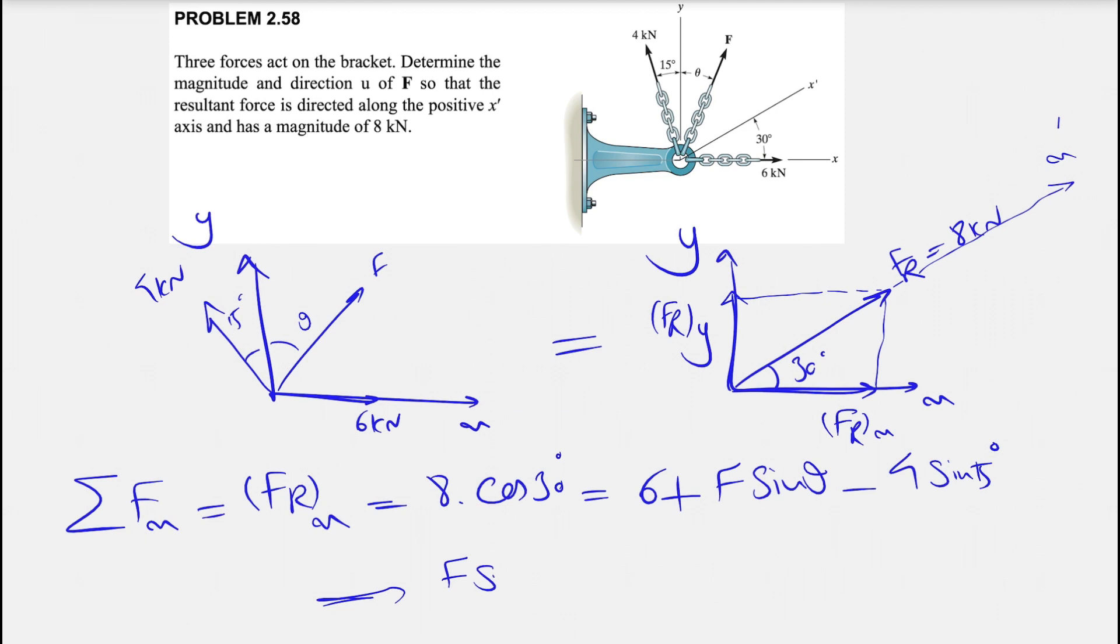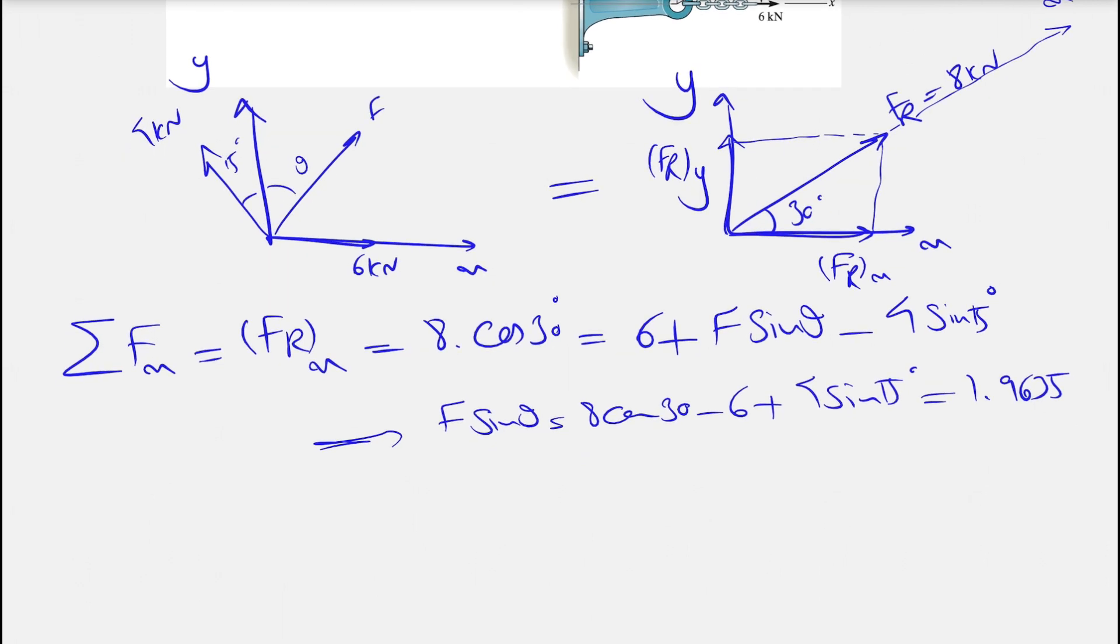And if we want to find the F sine of theta, we simply have 8 cosine of 30 minus 6 plus 4 sine of 15. And if we calculate this, we'll get 1.9635. So that was our x component.